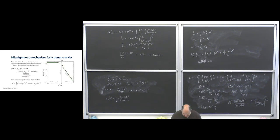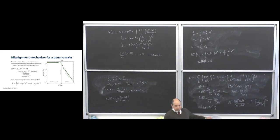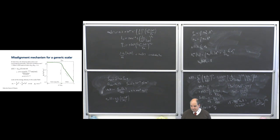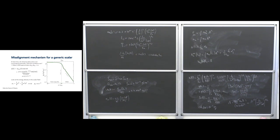Before the QCD phase transition we are in the radiation domination era. This is a normalized quantity, not in absolute units.